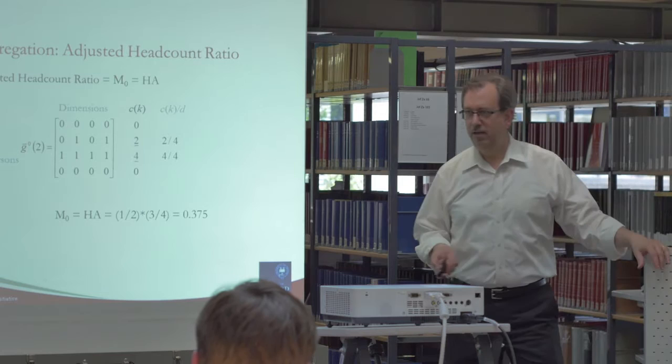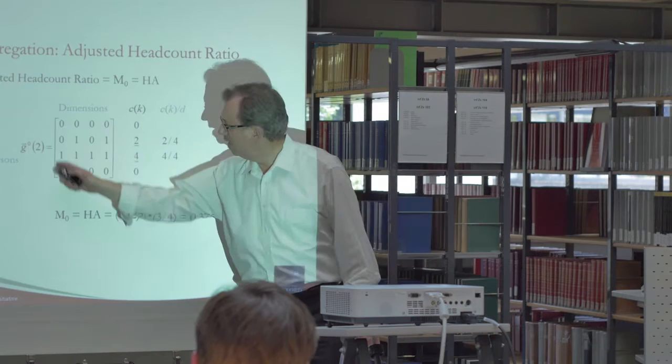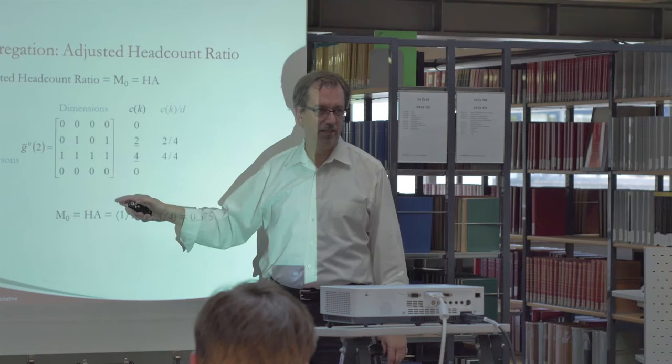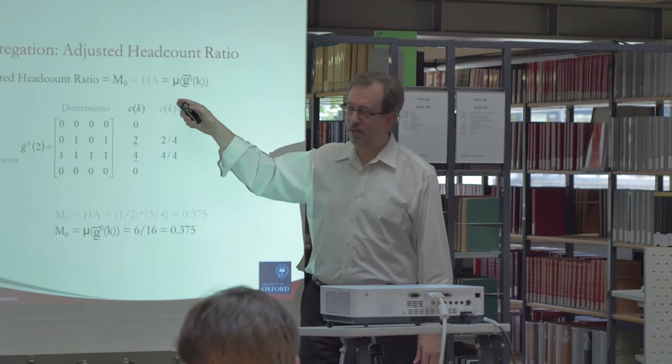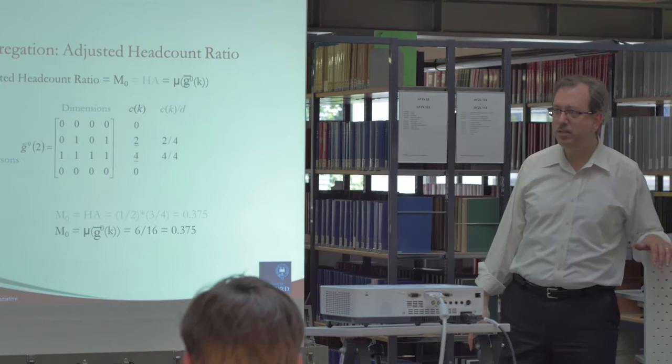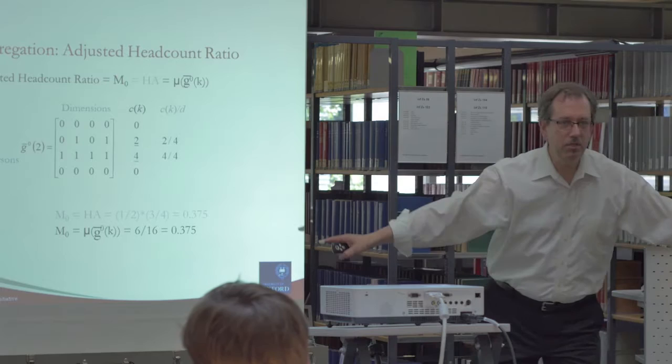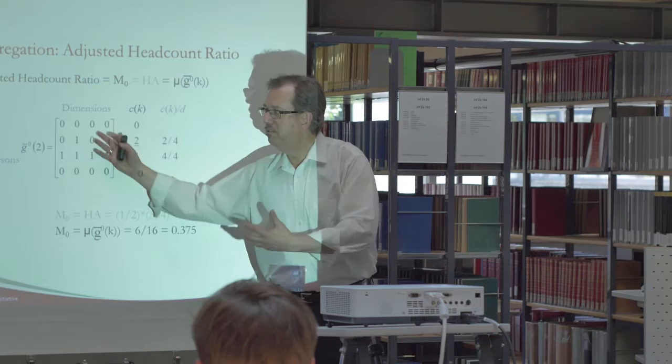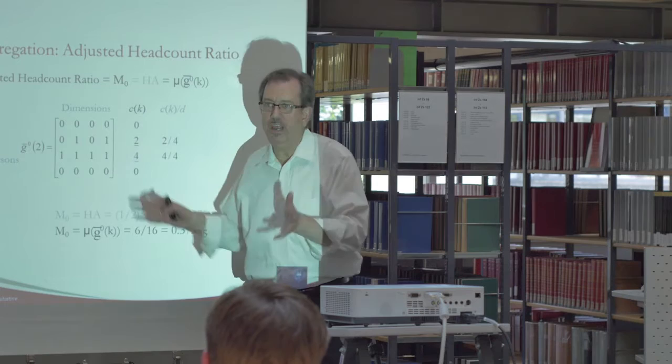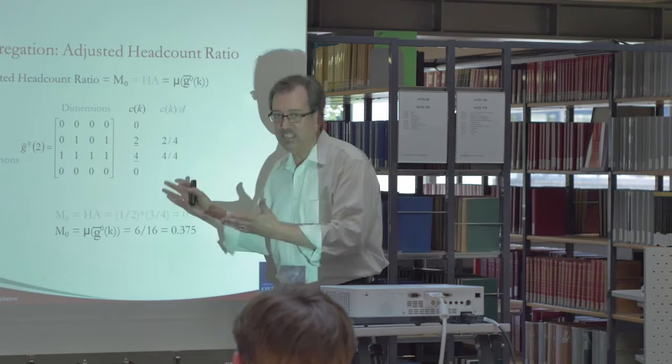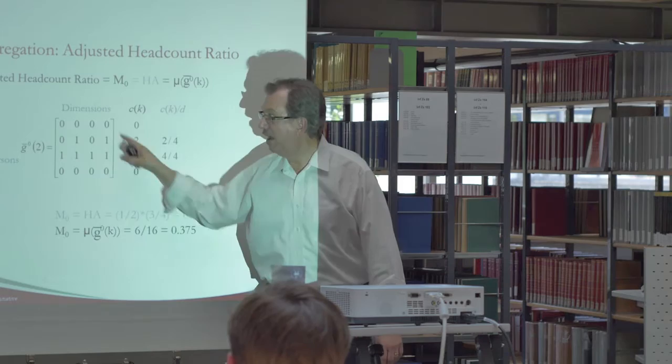What happens is that you have the adjusted headcount ratio. It's the product of the headcount ratio, the percentage of the people who are poor, the poverty rate, and the intensity with which people who are poor feel poverty or have poverty, the average deprivation count. So, with this type of measure, we could calculate H, a half, times A, three quarters, and this equals 0.375. For statisticians, it's an easier way of calculating things. We take this matrix and add up all the entries, divide by the number of entries. So, it's six divided by 16. That turns out to be what this is. So, it is another way of defining this measure. It's the mean of this matrix. And as you know, means have great statistical properties. You can do all kinds of cool stuff with them.